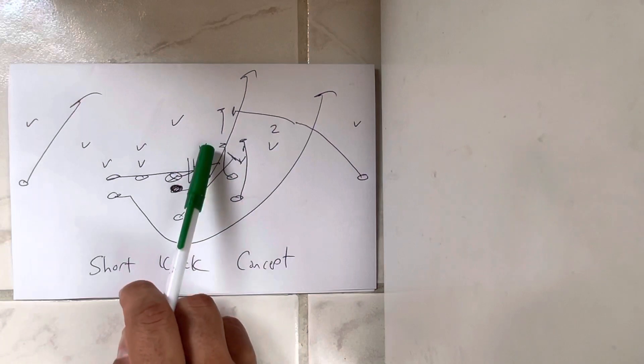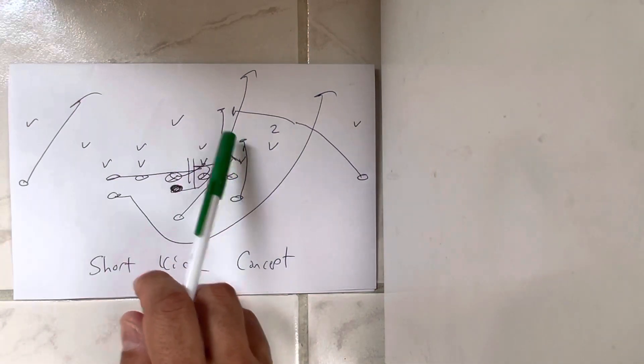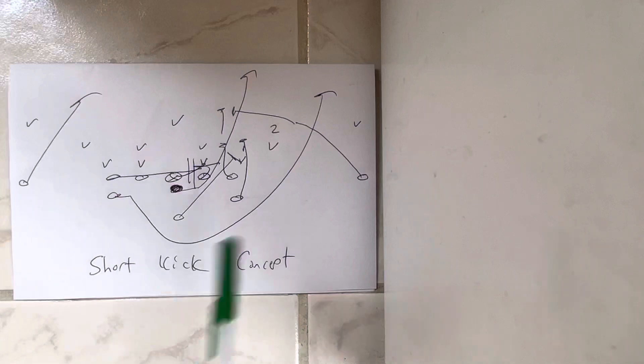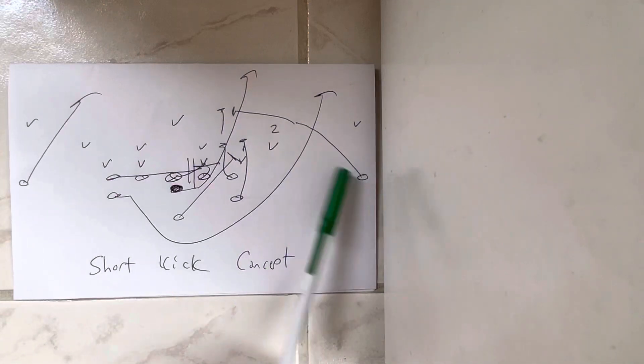A-back loads, so if the mic gets over the top of the tackle, he blocks him and gets to the safety. Backside receiver cuts off. The playside receiver on this can just crack the safety because he doesn't have to block the flank.